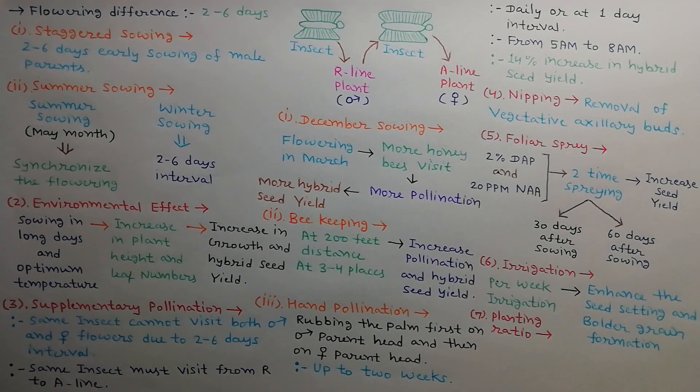Seventh is planting ratio. It should be 3:1 or 4:1 for summer season crop and 6:1 for winter season crop of sunflower.